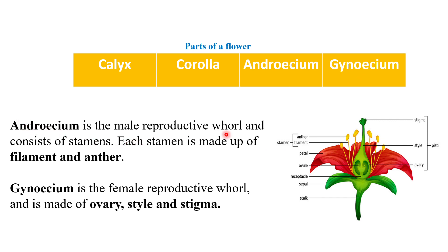The androecium is the male reproductive whorl and consists of stamens. Each stamen is made up of a filament and an anther. The female reproductive whorl is known as the gynoecium and is made up of ovary, style, and stigma. These two parts directly take part in sexual reproduction in angiosperms.